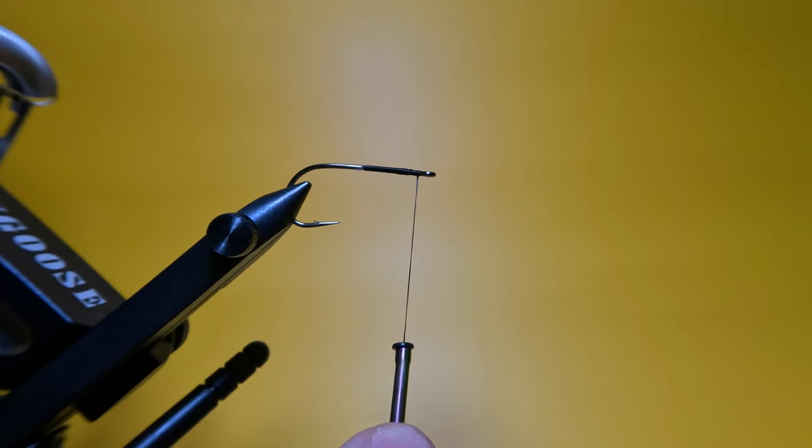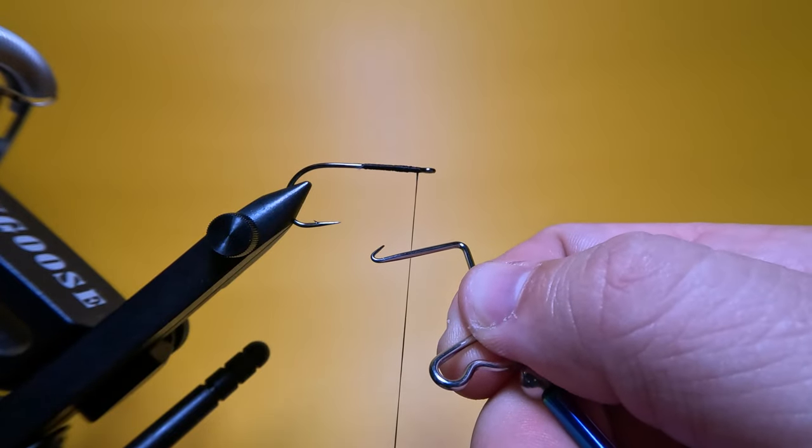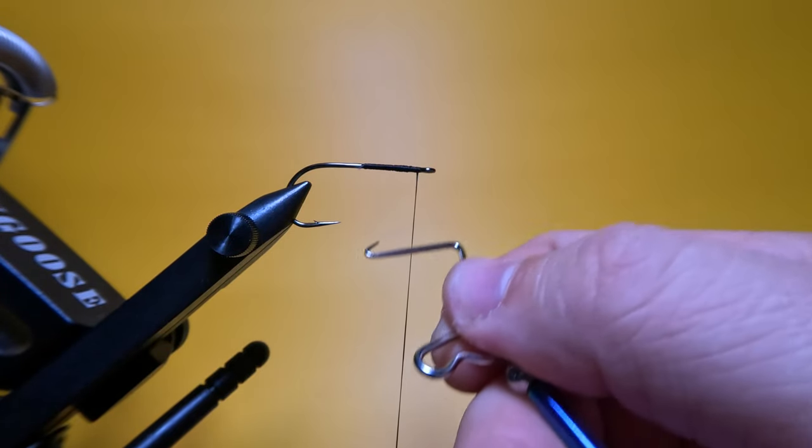So to get started, you first want to let out about 3 to 4 inches of thread. Next, we want to grip our tool by the steel wire. That will prevent it from rotating, which is very important.